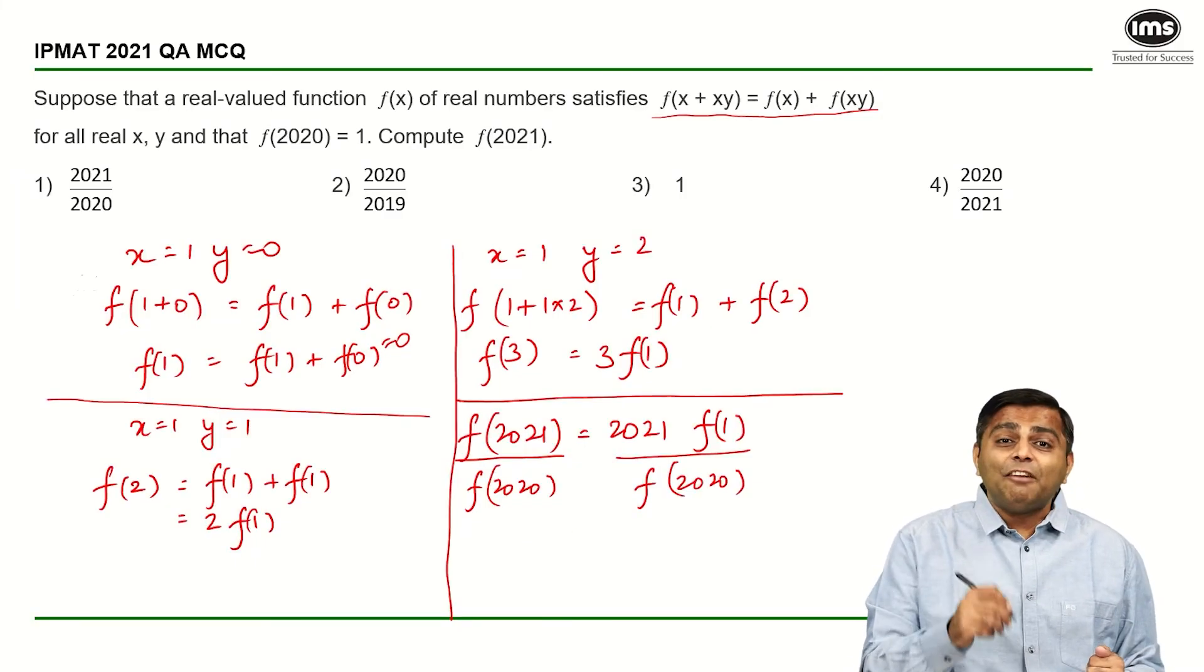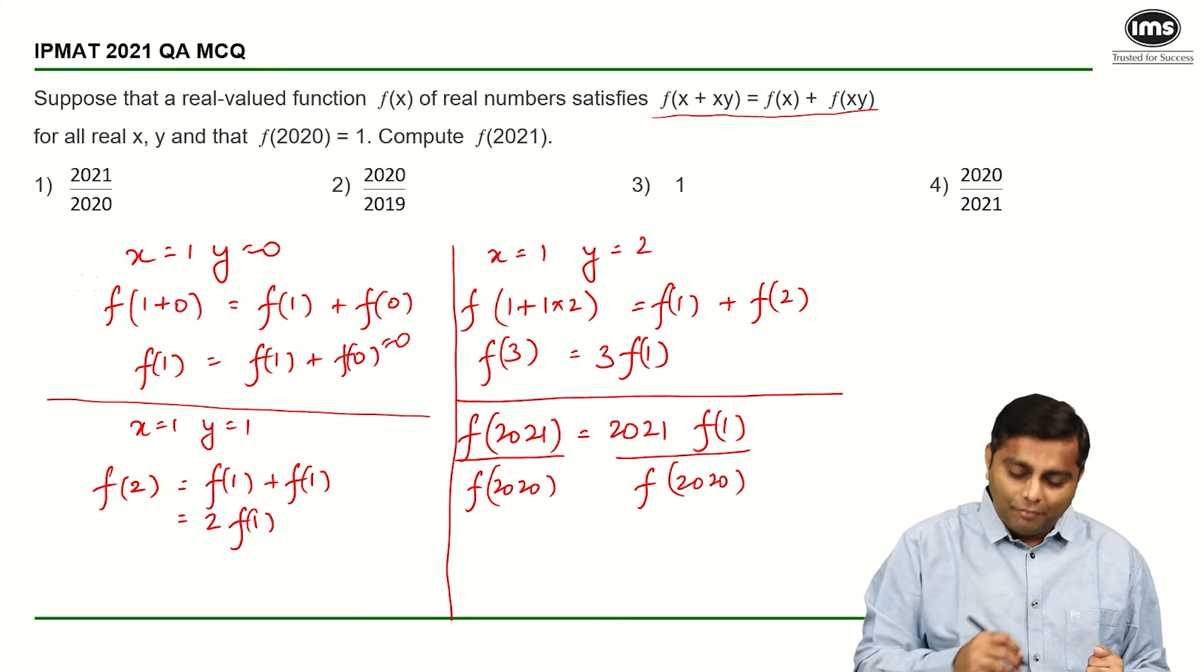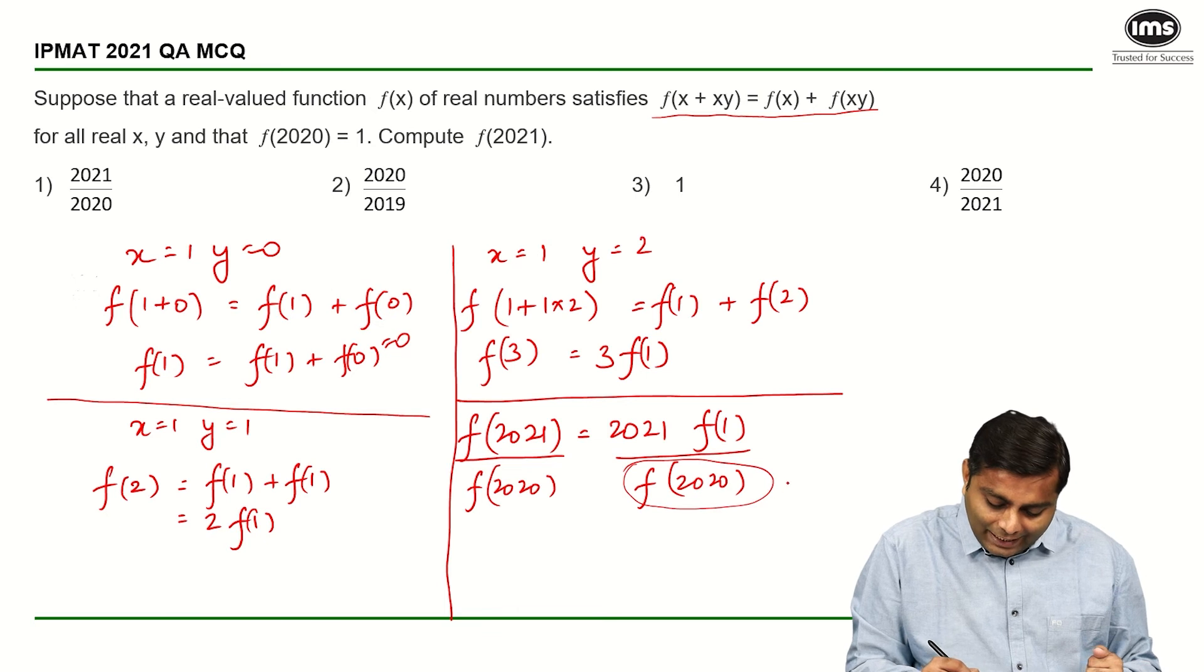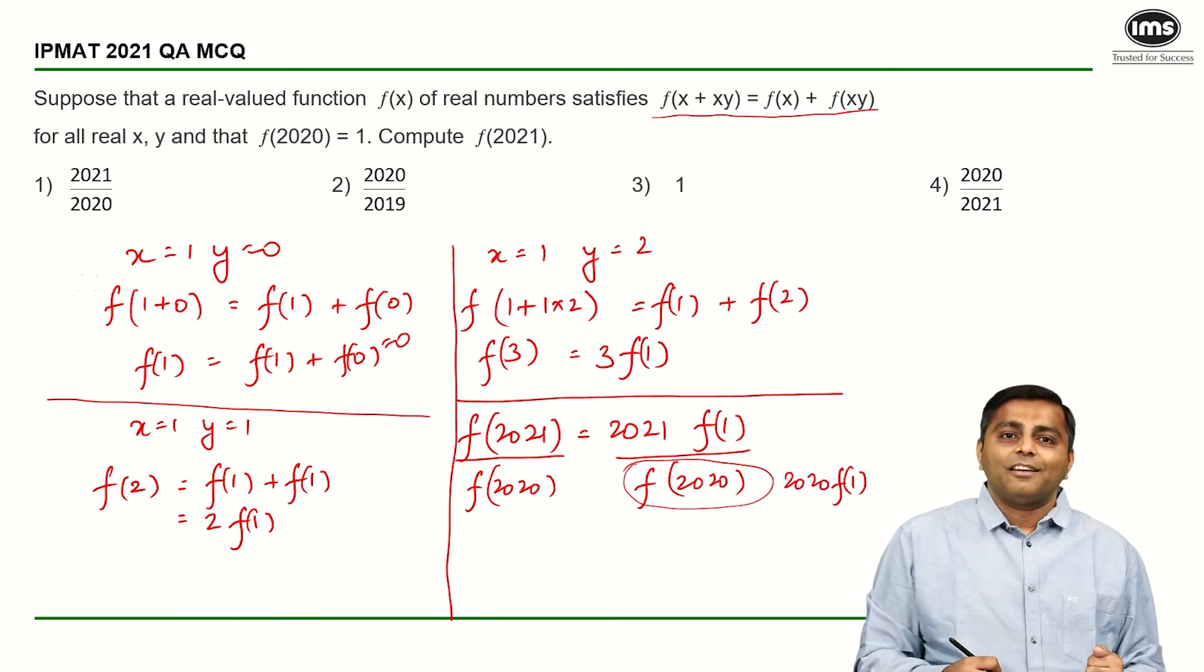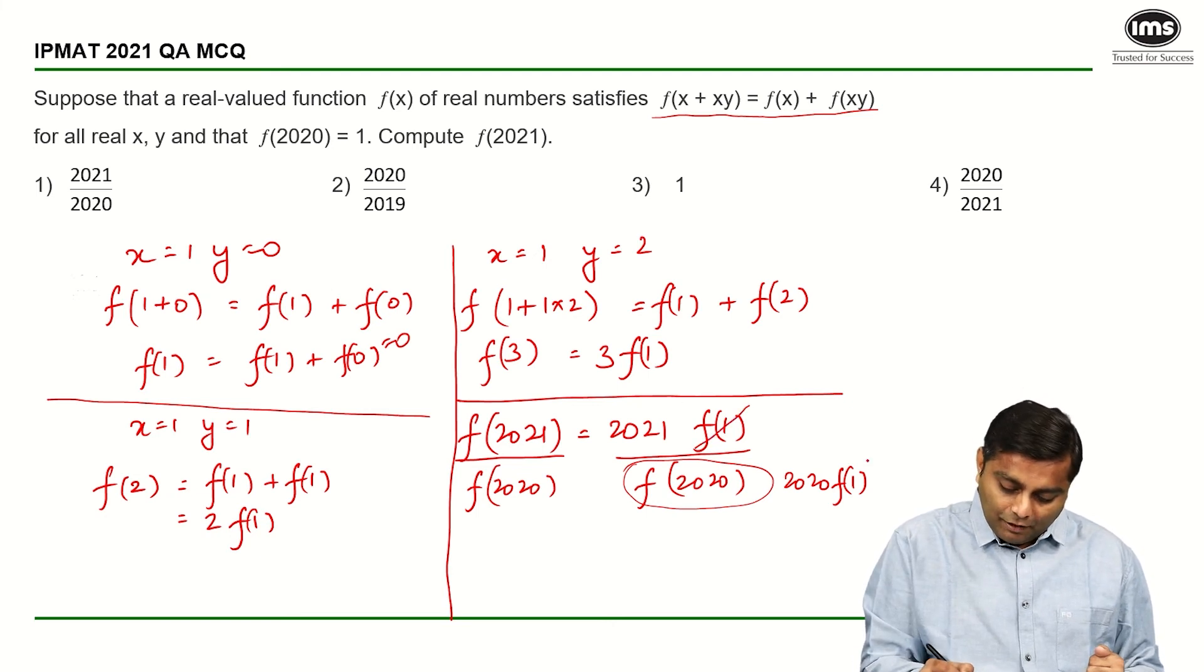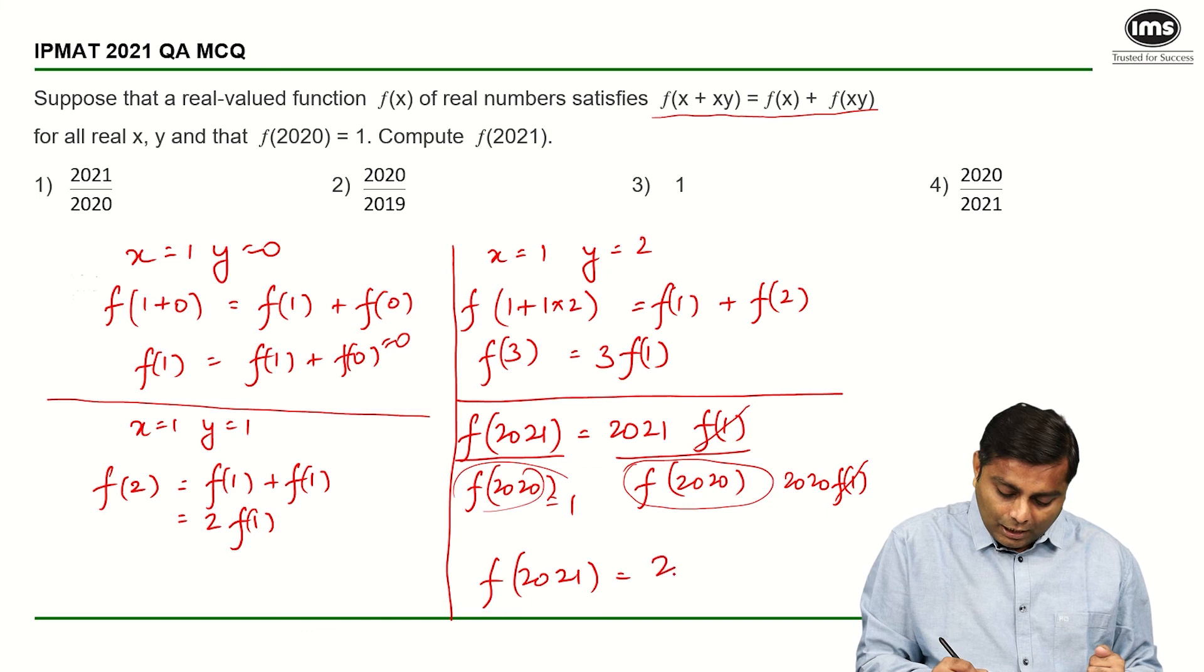Now, f(2020) I know is 2020 times f(1). Here the denominator I can write it as 2020 times f(1). Because I want to cancel f(1), I can now cancel f(1) with f(1). This anyway is equal to 1 and hence f(2021) is nothing but 2021/2020.